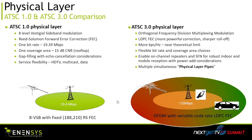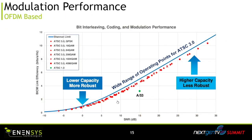On the RF part, the big point you have to understand for ATSC 3 is that you have the choice to select the robustness, coverage, and bandwidth of your signal. There are many different parameters in ATSC 3 modulation to provide these capabilities, ranging from 2 megabits per second up to more than 50 megabits per second in a 6 MHz channel.